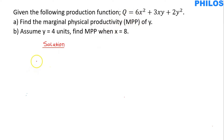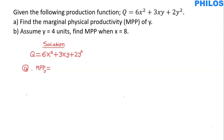To solve this, let's recall the equation: Q equals 6x squared plus 3xy plus 2y squared. Question A says we should find the marginal physical product, MPP of y. To solve that, MPP of y equals the partial derivative of Q with respect to y, meaning we differentiate Q with respect to y. If the equation says MPP of x, then we differentiate Q with respect to x.